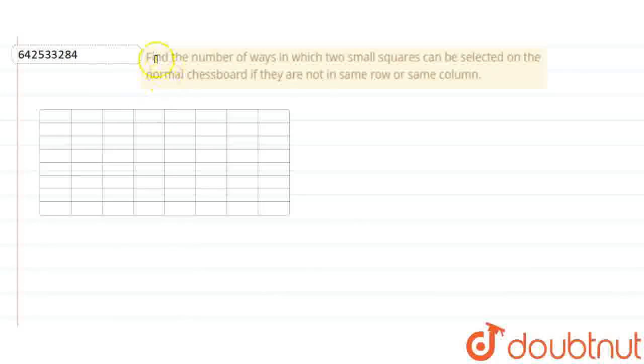So the question we have is, find the number of ways in which two small squares can be selected on the normal chessboard if they are not in the same row or same column.